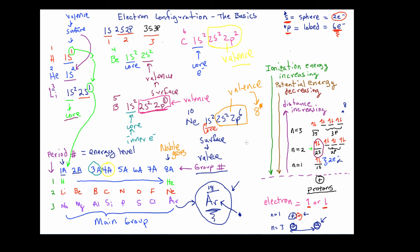This should give you an idea of how to do electron configuration. I would encourage the viewer to go through and actually run the electron configurations for period 3 from sodium to argon using the same strategy we used for the elements from hydrogen through neon. One last thing to say is that all chemical reactions that involve the transfer of electrons only involve the surface electrons. This is important in the formation of ions and it's important in the formation of molecules.